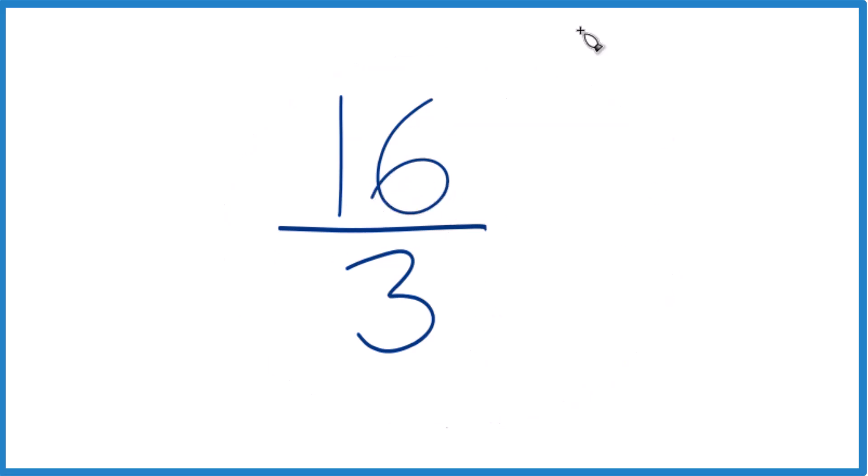So if we want to try to simplify 16 over 3, we need to find a factor that goes into both 16 and 3 evenly. The thing is, 3 doesn't go into 16, so we really can't simplify this fraction here, 16 thirds. There's nothing that goes evenly into 16 and 3, except 1, and that would just give us 16 thirds again. So this is already simplified.